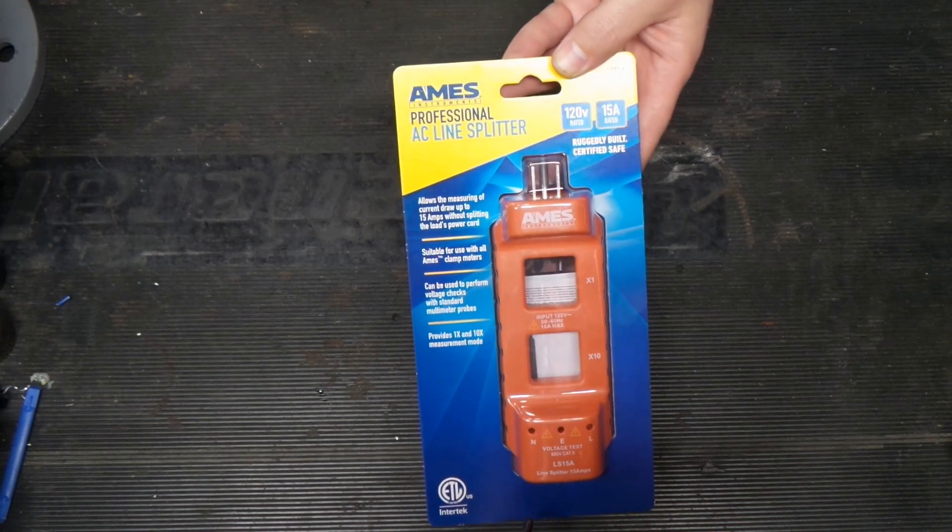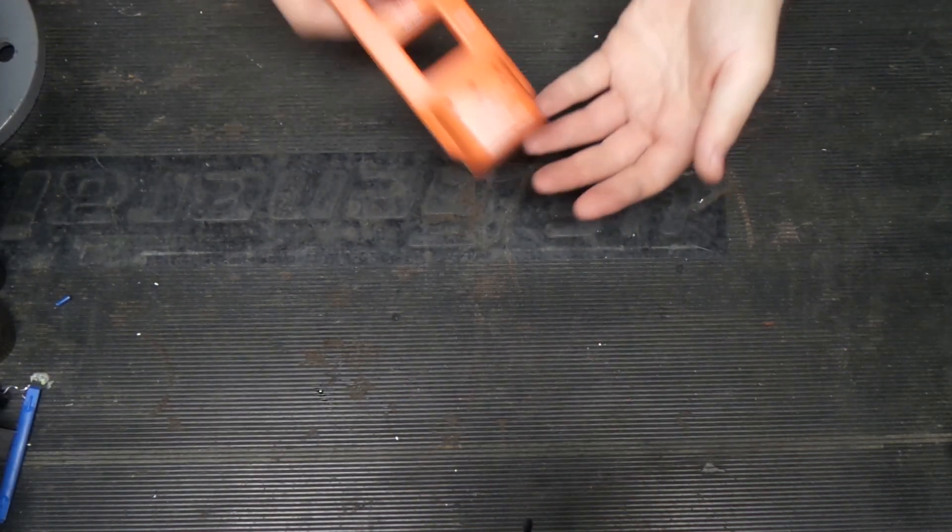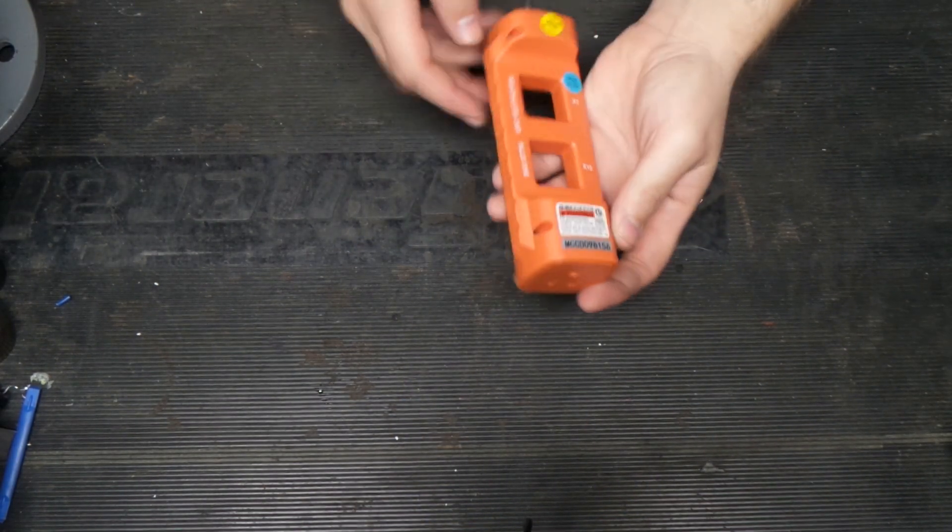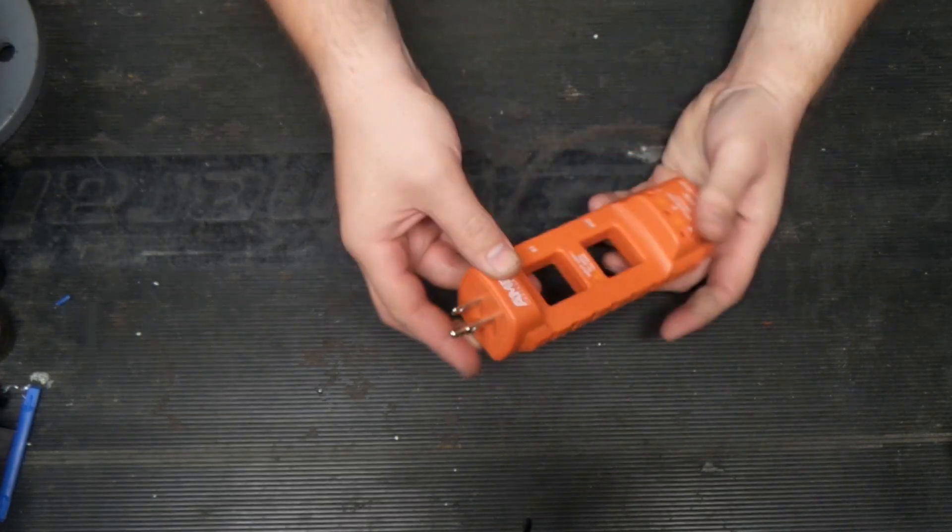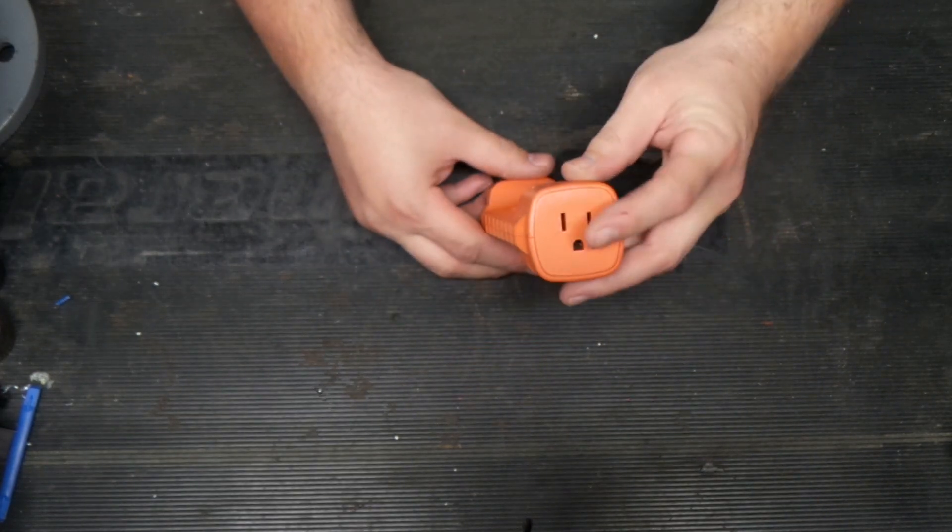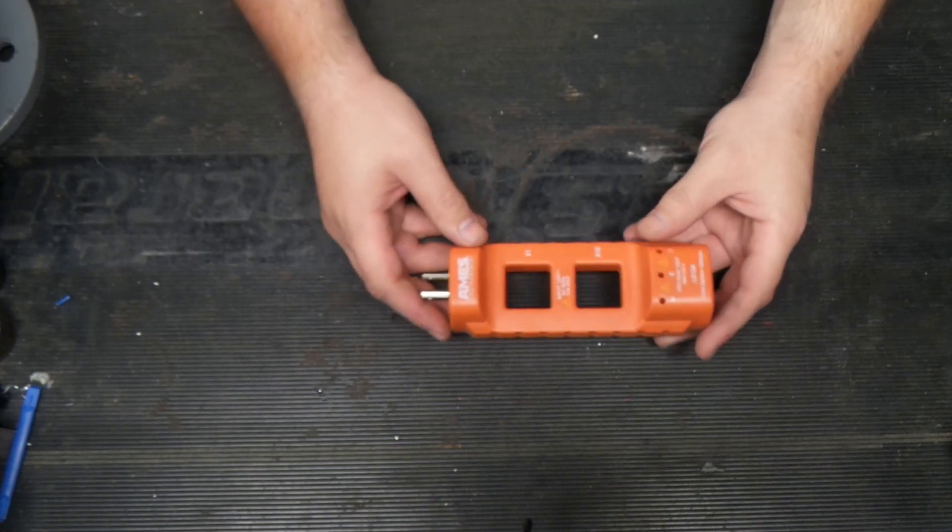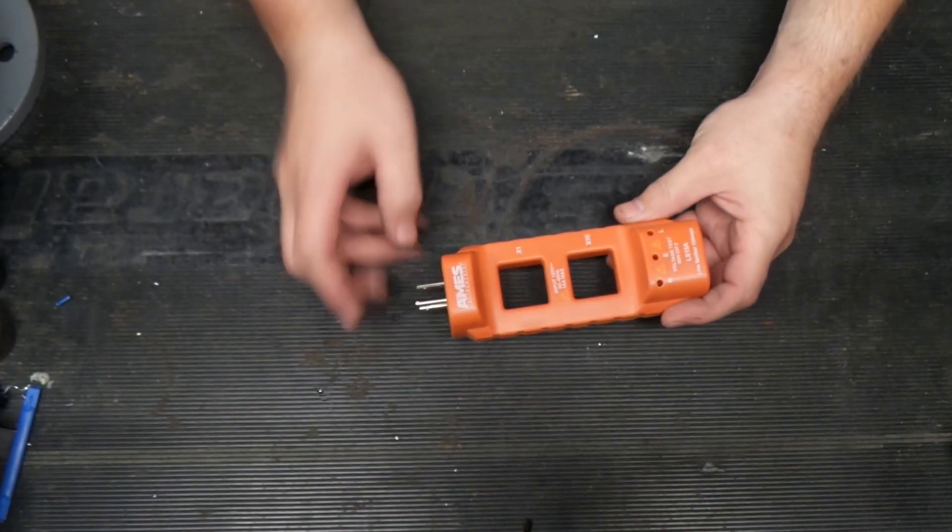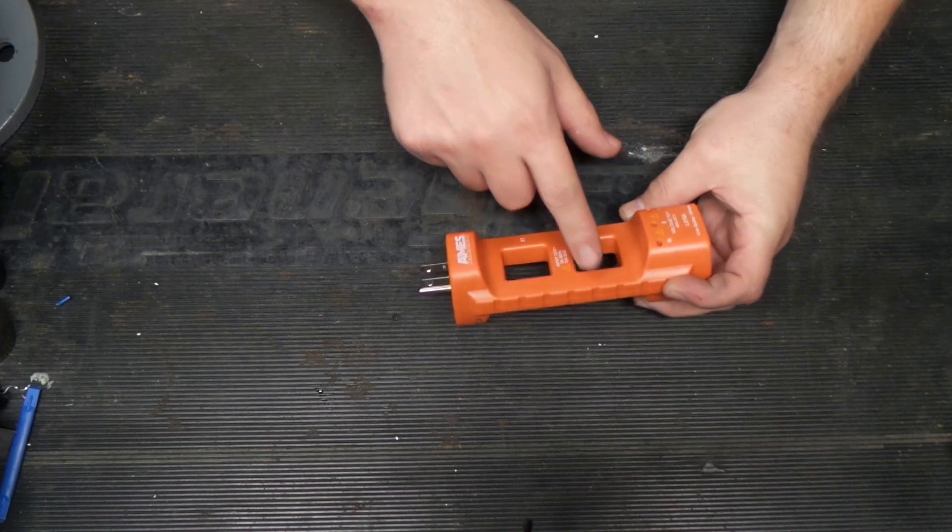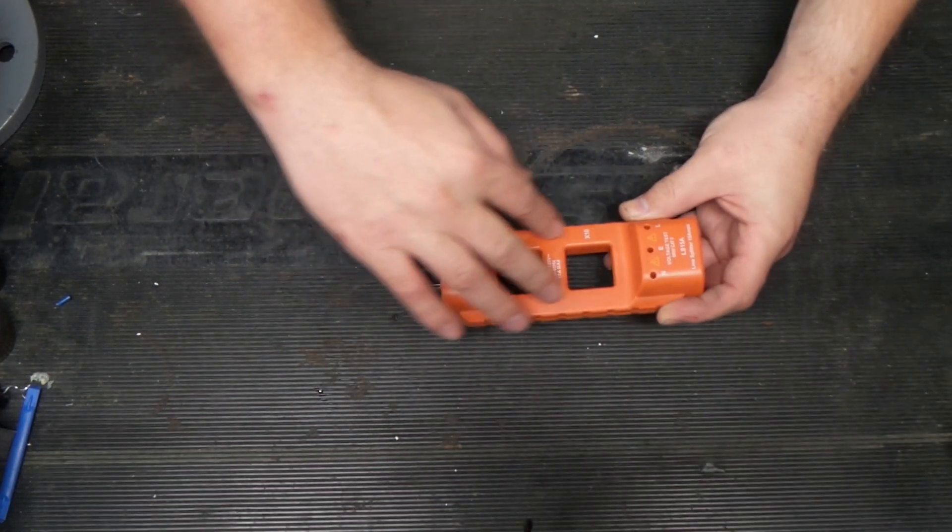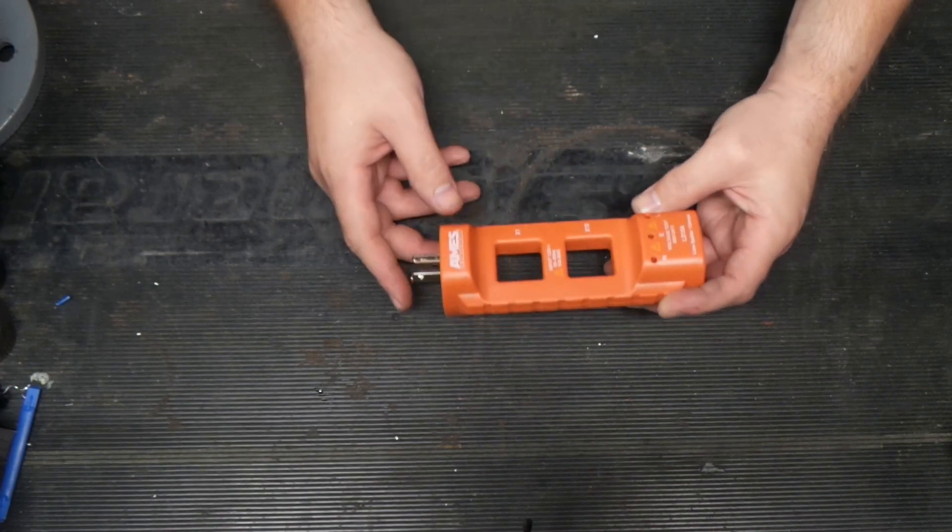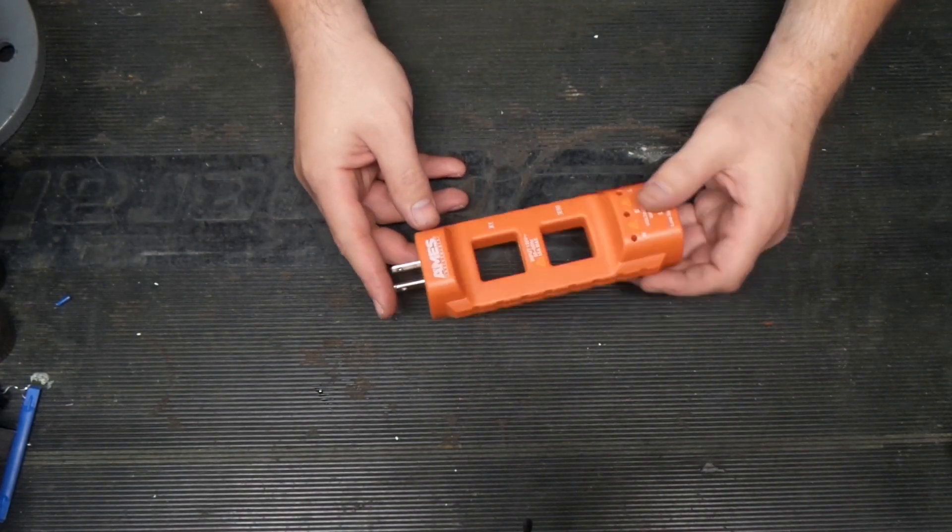So let's get this open and take a look. Okay, so let's dig into this thing. So what this thing does is you would plug this into a cord and then you plug something into it, and basically what it does is it has the current carrying conductors split inside of it and you can stick your amp clamp over it and read the current.